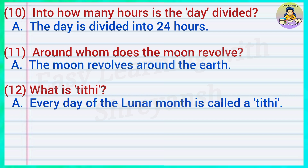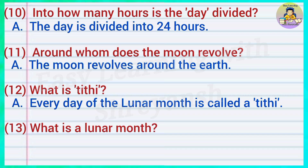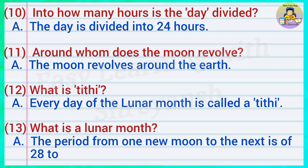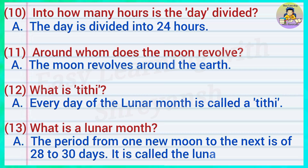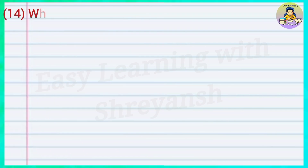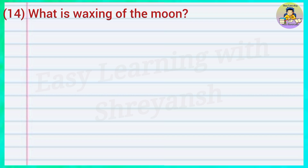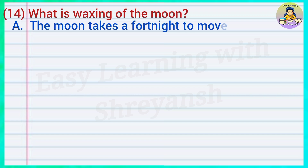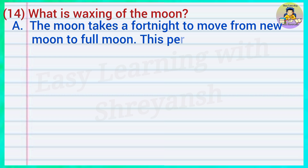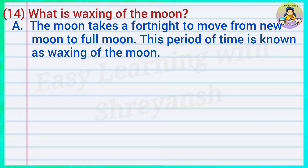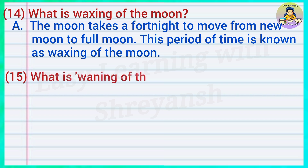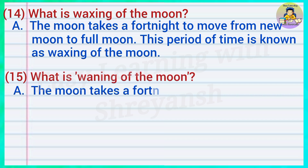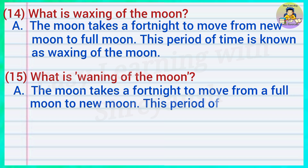Thirteen: What is a lunar month? Answer: The period from one new moon to the next is 28 to 30 days; it is called a lunar month. Fourteen: What is waxing of the moon? Answer: The moon takes a fortnight to move from new moon to full moon; this period of time is known as waxing of the moon. Fifteen: What is waning of the moon? Answer: The moon takes a fortnight to move from full moon to new moon; this period of time is known as waning of the moon.